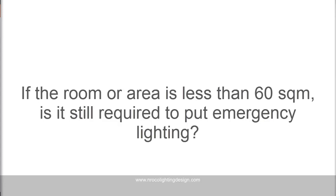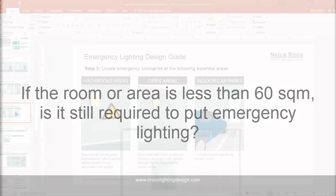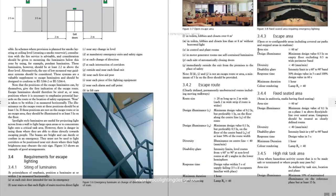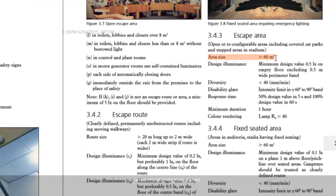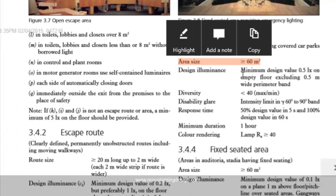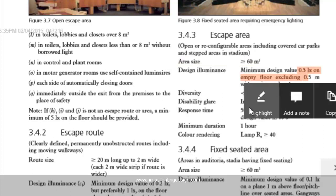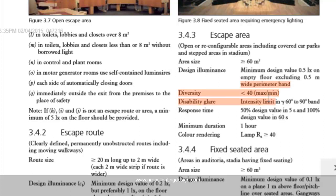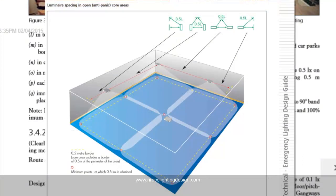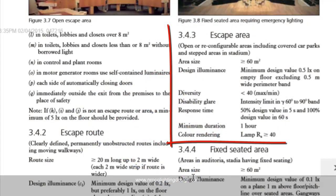He asked me that question because, based on the standard — this is a UK standard — for escape areas more than 60 square meters, we need to provide emergency lighting with an illuminance value of 0.5 lux. There are some other technical descriptions including glare limits and maximum and minimum values. The standard mentions the area size threshold of more than 60 square meters, so he asked what happens if it's less than 60 square meters.